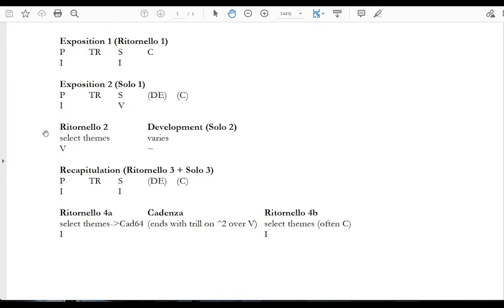Anyway, ritornello 2 will feature the orchestra. It will usually still maintain that secondary key, whatever it was. In this case, this example chart gives the common key areas for a major mode concerto form.